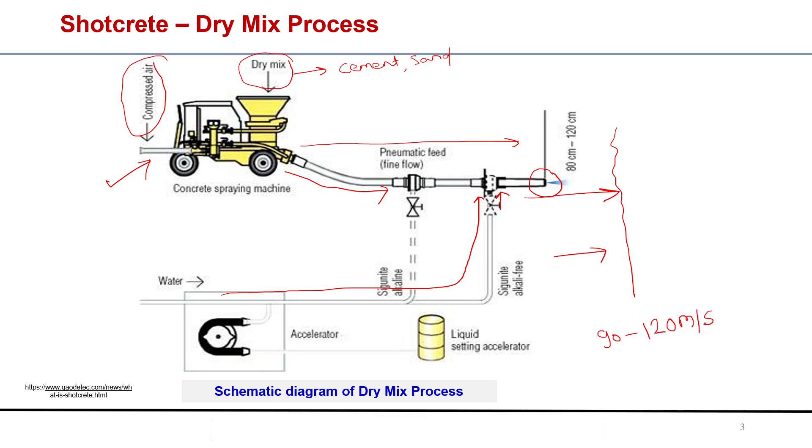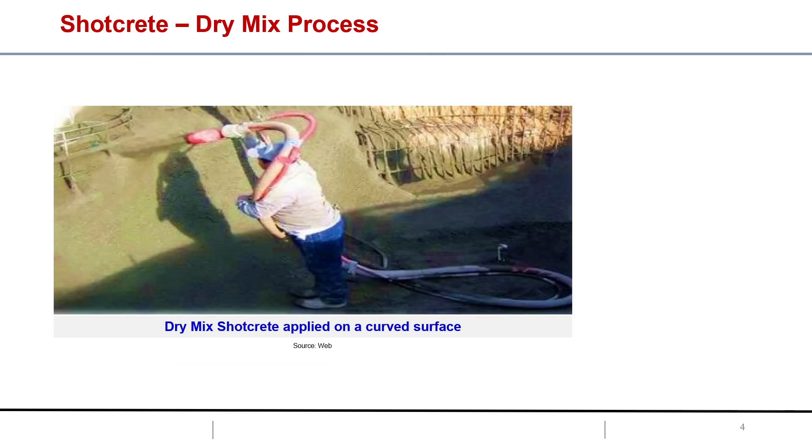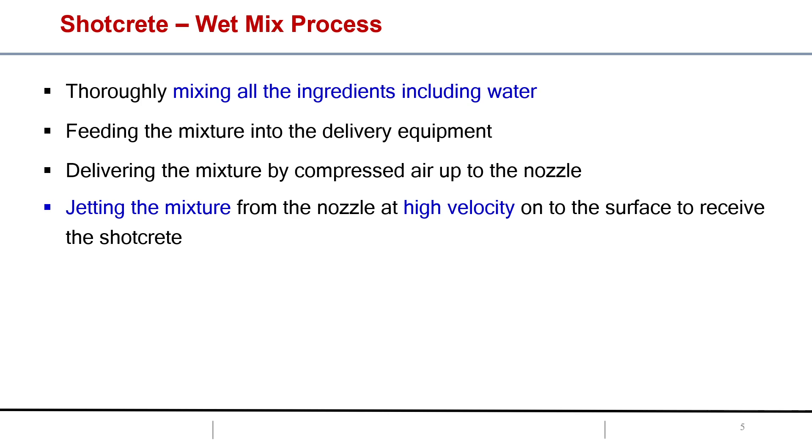At the nozzle end, nozzle is the point through where the material is released. Here you can see a person who is applying the material with high pressure and you can see there is no any formwork. That is the biggest advantage.